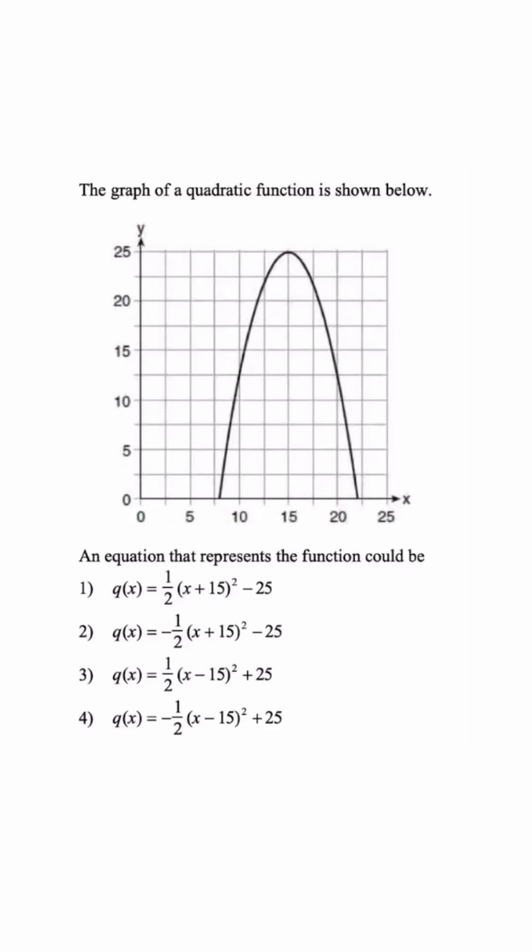We have a quadratic function, and they want us to pick the correct equation that represents this function. So number one, because this graph opens down, that means this is a negative function. So out in front we should have a negative sign. So answer choice one, answer choice three are gone.